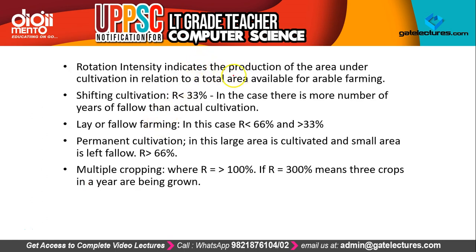Rotation intensity indicates the proportion of the area under cultivation in relation to the total area available for arable farming. We look at how much area is being used for cultivation versus the total arable area available, expressed as a percentage.